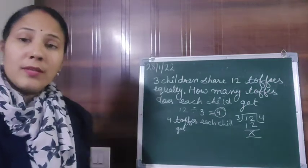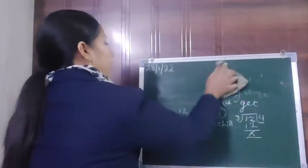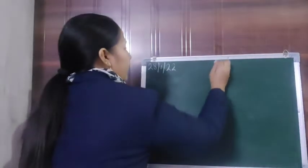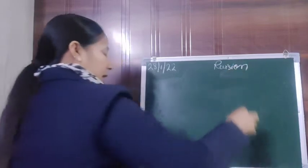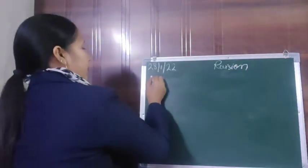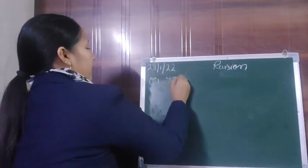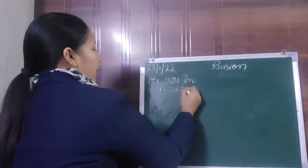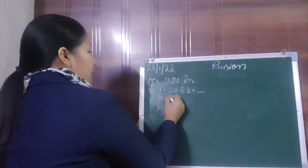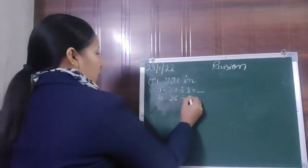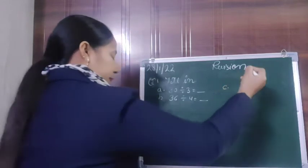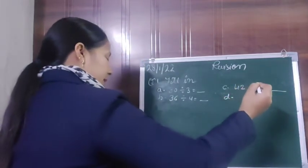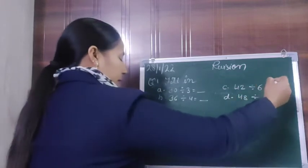So let's do the revision now. Children, take out your copy. Let's do the revision in copy. Question number 1, fill in: A part is 30 divided by 3, B part is 36 divided by 4, C part is 42 divided by 6, D part is 48 divided by 6.